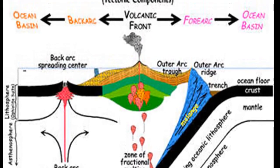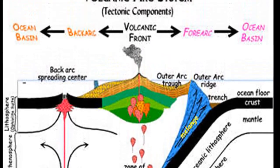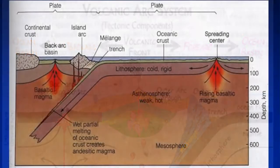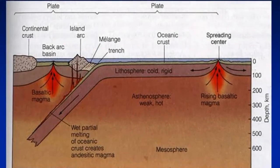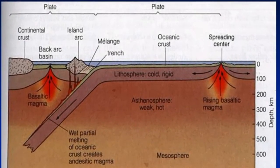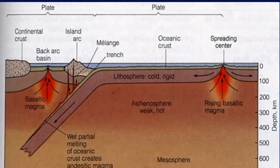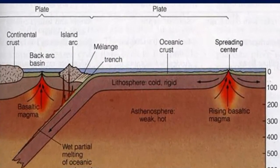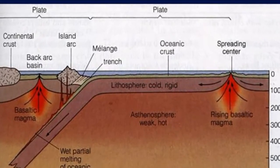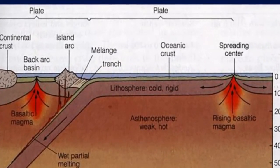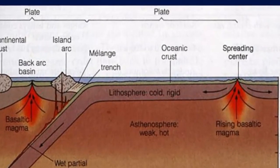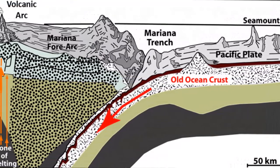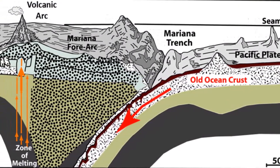As the subducting plate sinks, it creates a flow — slab suction — in the asthenosphere that pulls the upper plate toward the retreating trench. As a result, the overriding plate is under tension and may be elongated and thinned. If tension is maintained long enough, a back arc basin may form.